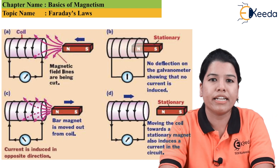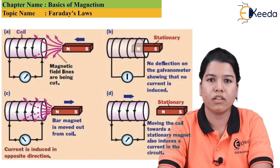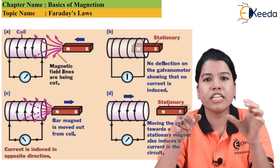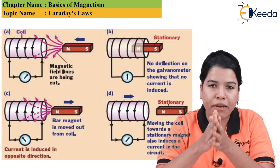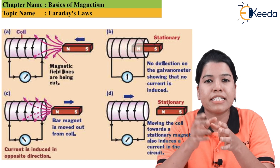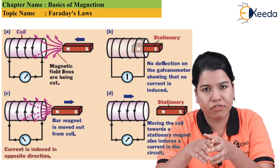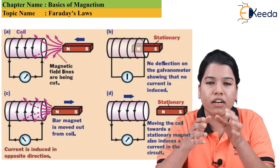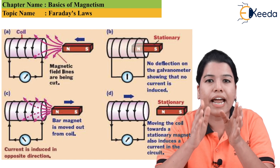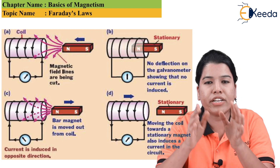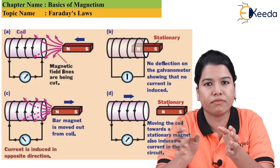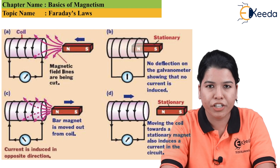Then and only then will the EMF be induced in the conductor. When the conductor is stationary and the coil is moving, whatever EMF is induced in the conductor is called statically induced EMF. But when the conductor is moving and the coil is stationary, whatever EMF is induced in the conductor is called dynamically induced EMF.